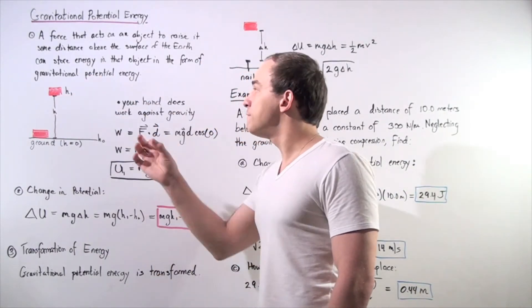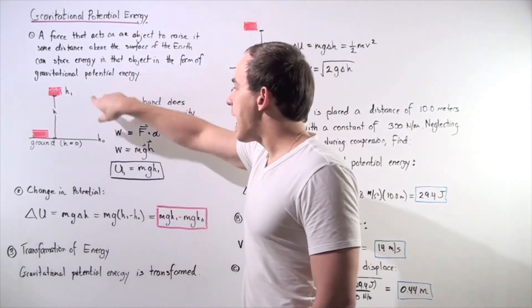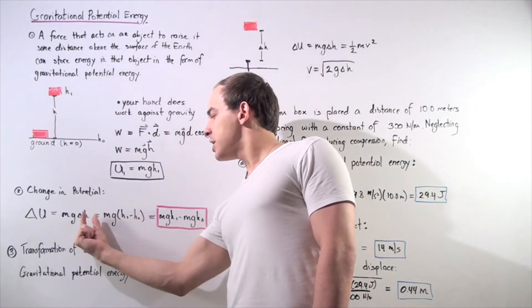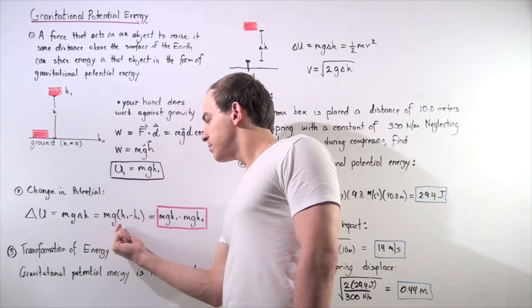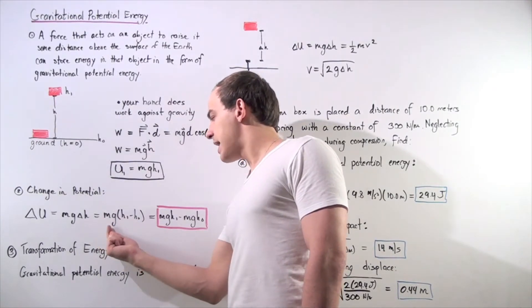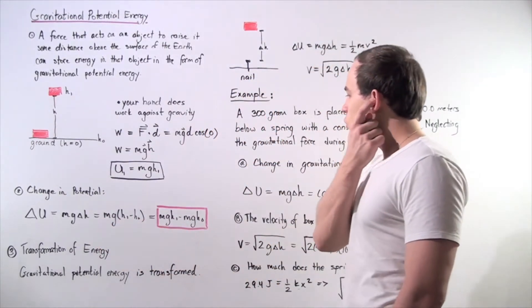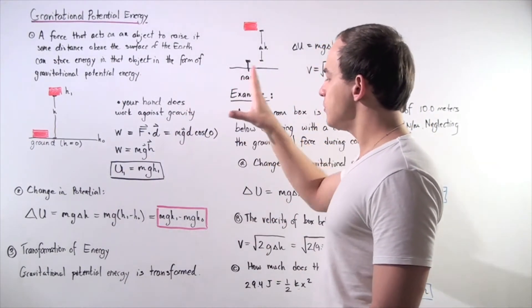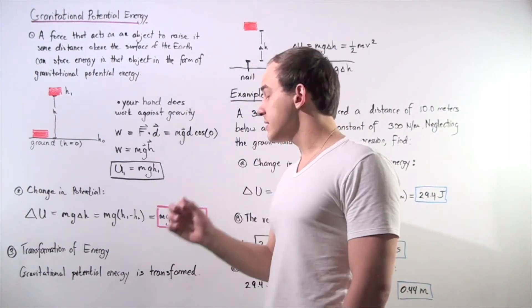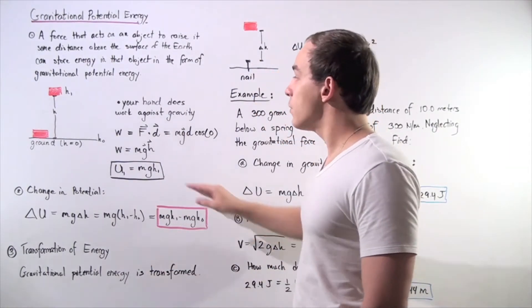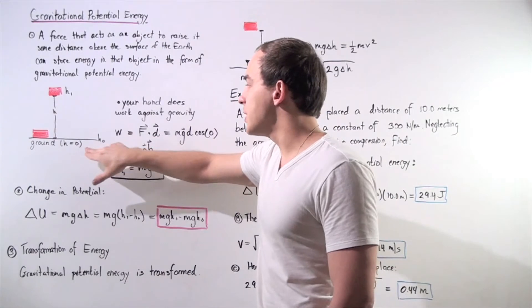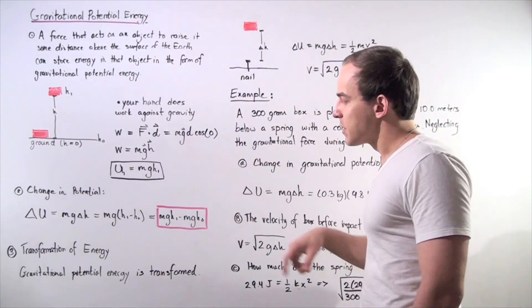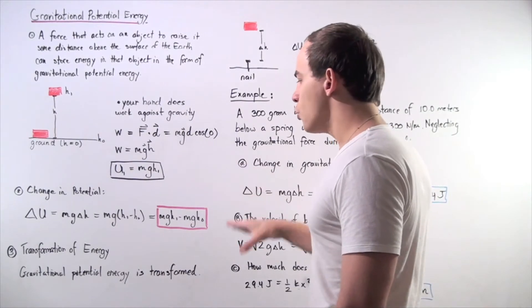For example, if our final height is h1 and our initial height is h0, we can represent our change in h accordingly. Distributing mg, the change in gravitational potential energy equals mgh1 minus mgh0. In this case we assumed h0 to be zero, so that term cancels, but that is not necessarily true all the time.